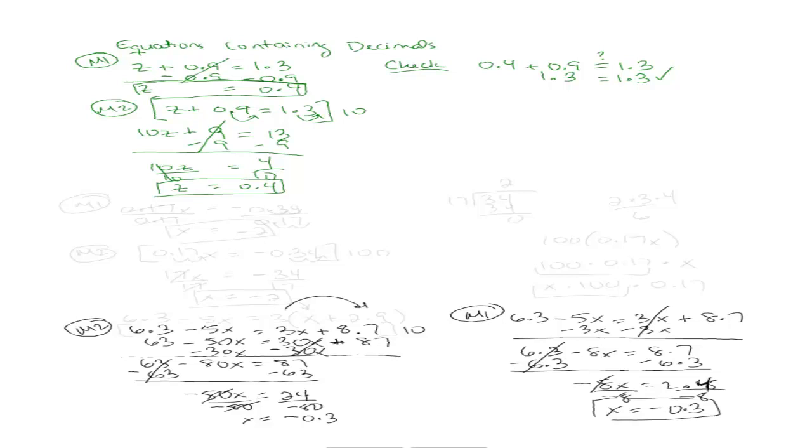So let's try another one. Let's say we have 0.17x equals negative 0.34. Let's do it both ways. Let's start with method one. So with method one, how do I isolate x here? Divide both sides by 0.17.